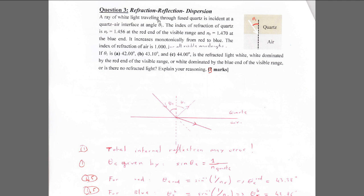Let's go through these problems. The first one: a ray of white light traveling through fused quartz is incident at a quartz-air interface at angle theta1. The angle of refraction is higher in the quartz than in air, so we may have total internal reflection, and this is what we have to be careful about in this problem.